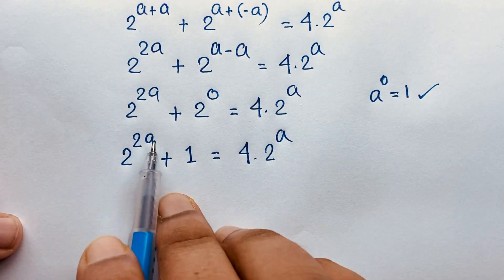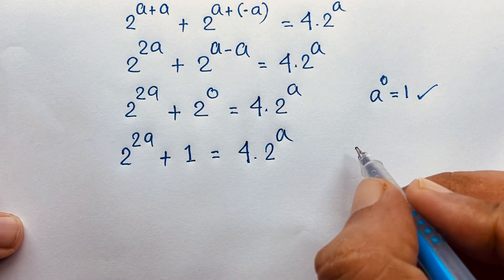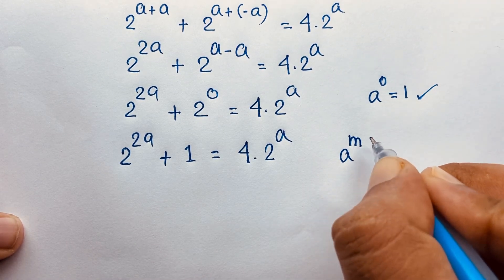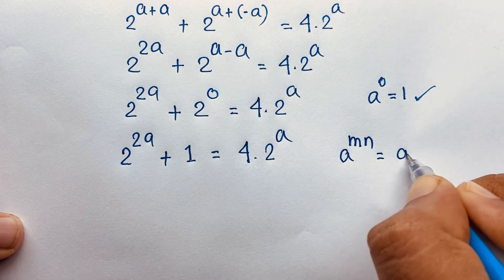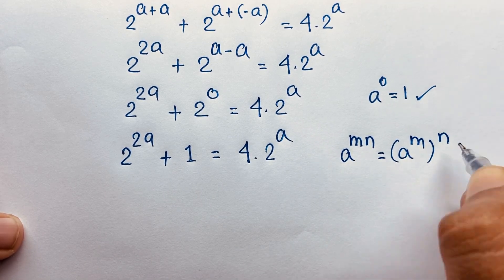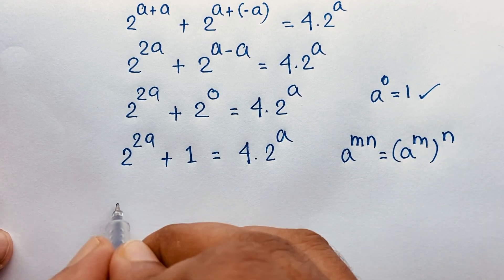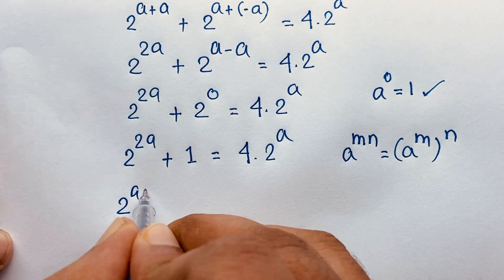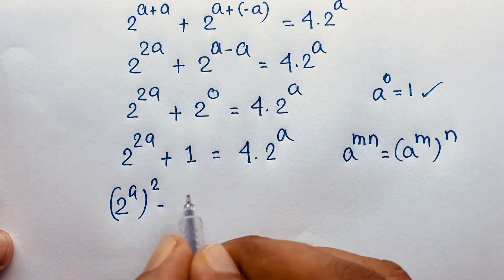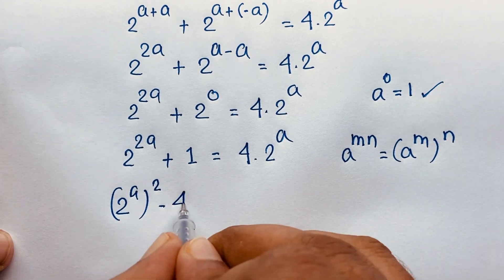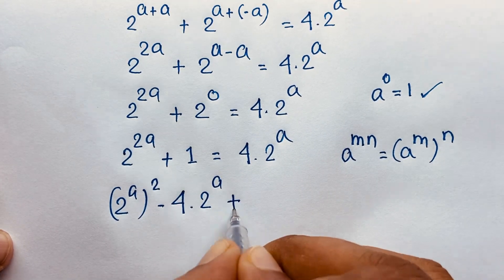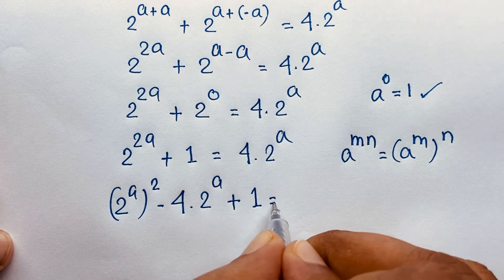For 2 to the power 2a, using the formula a to the power m, whole to the power n: rewriting 2 to the power a, bracket squared, minus 4 times 2 to the power a, plus 1 equals 0.